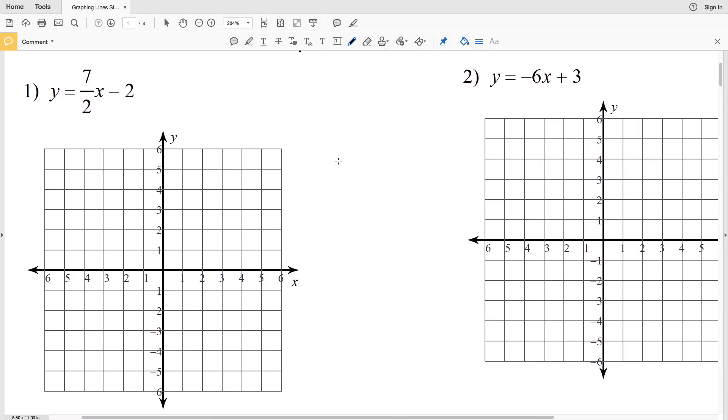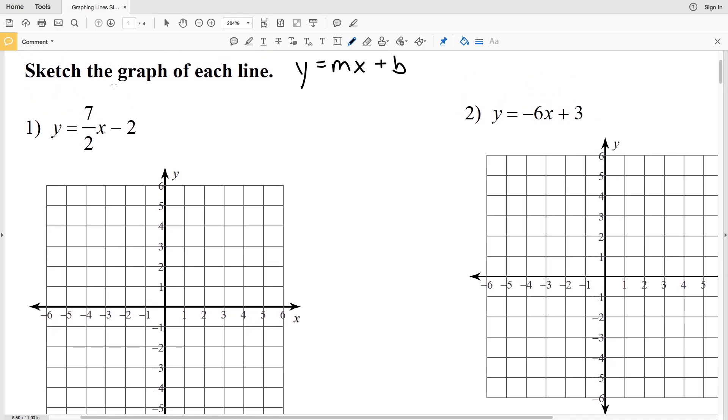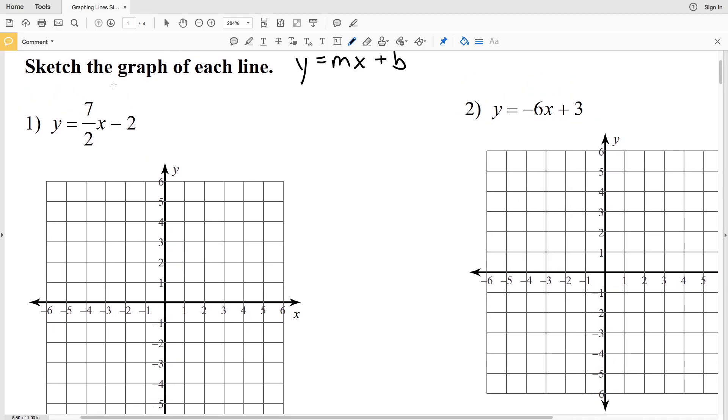Looking at number 1, we have y equals seven halves x minus 2. There are a couple different methods for graphing a line, so I'm going to start by showing you how to utilize that y equals mx plus b equation. As I mentioned, m is the slope, so m is equal to 7 over 2. Slope you can also think of as the rise over the run.